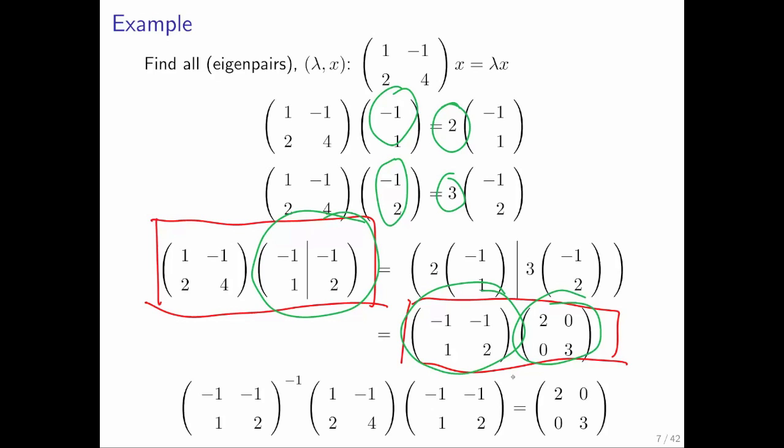Notice that we can multiply this on the left by the inverse of this matrix right here. And then you get the identity there. And if you stare at it hard enough, this is what you get. And notice that what we have done is we found a matrix X such that X inverse times A times X is a diagonal matrix D or lambda.